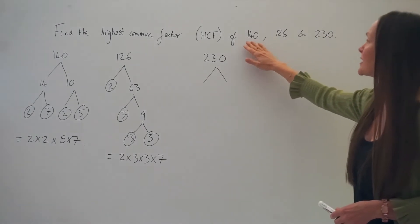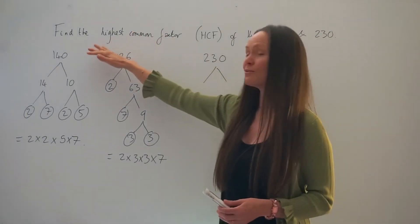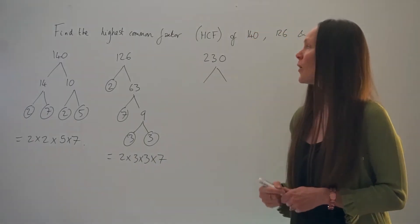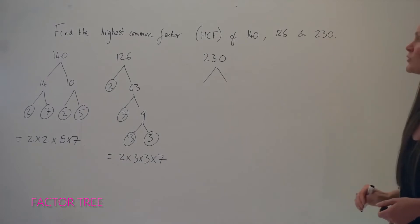Notice how I've used the same two numbers as in part 1, so I don't need to redo those factor trees. What I have to do is draw a factor tree for the third number, 230.